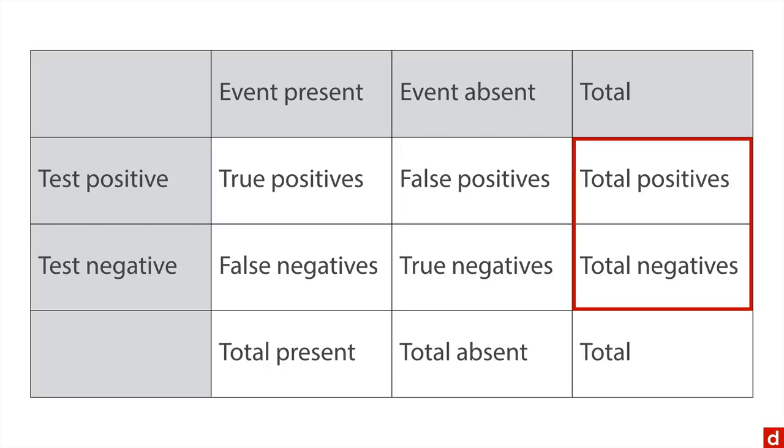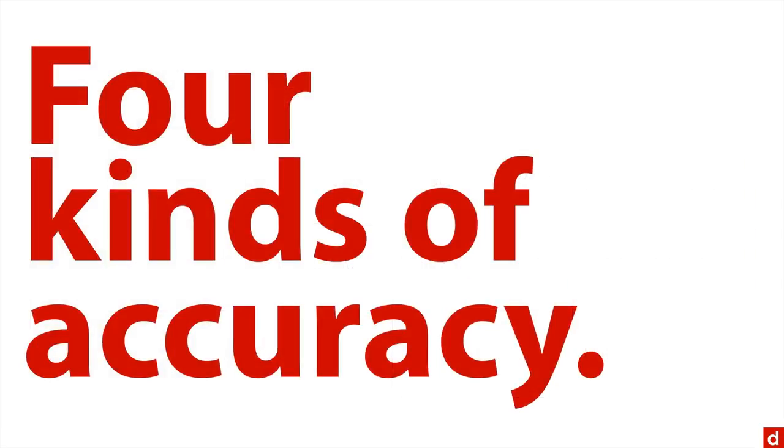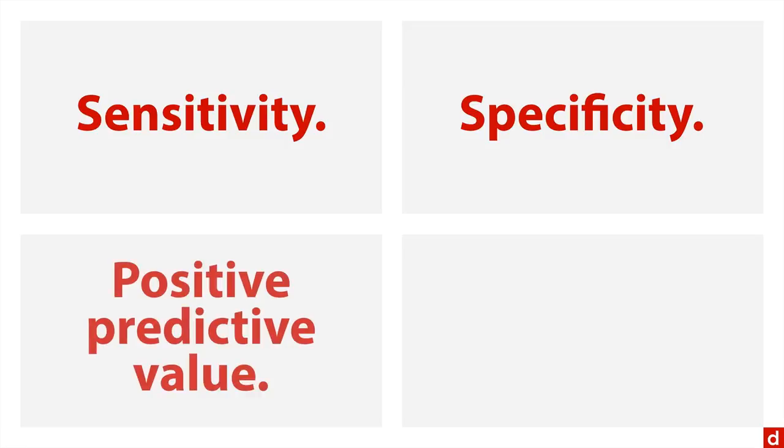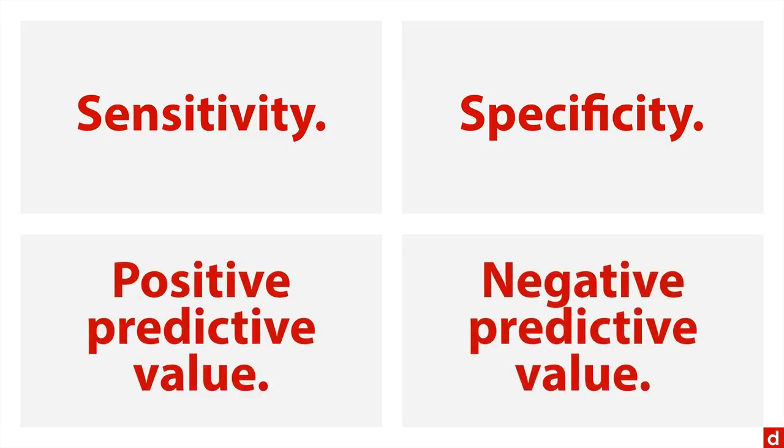Now from this table, what you get is four kinds of accuracy, or really four different ways of quantifying accuracy using different standards. And they go by these names: sensitivity, specificity, positive predictive value, and negative predictive value. I'll show you very briefly how each of them works.